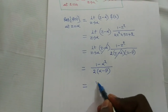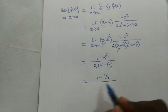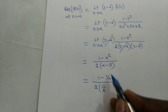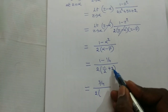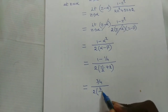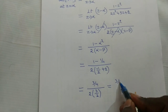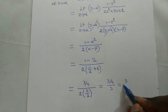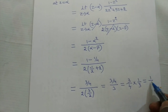Substituting α = −1/2 and β = −2: numerator = 1 − (−1/2)² = 1 − 1/4 = 3/4. Denominator = 2·(−1/2 − (−2)) = 2·(3/2) = 3. So the residue = (3/4)/3 = (3/4)·(1/3) = 1/4. The residue at α is 1/4.